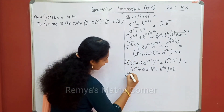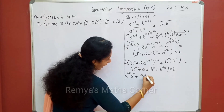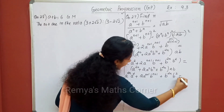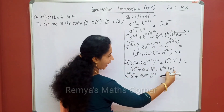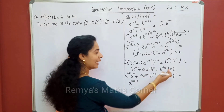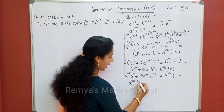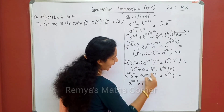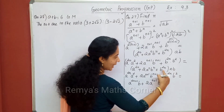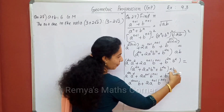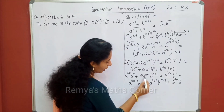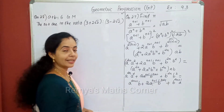Left side equal to: a raised to 2n into a square, plus 2 a raised to n plus 1, b raised to n plus 1, plus b raised to 2n into b square. Right hand side equal to: a raised to 2n into ab — multiply a raised to 2n into a raised to 2n plus 1, plus 2 a raised to n into b, b raised to 2n plus 1 into a. This is the right side. This is the middle term: 2 a raised to n plus 1, b raised to n plus 1, and the right terms — we cancel it.